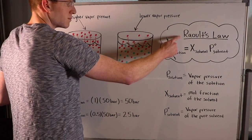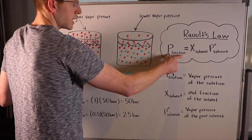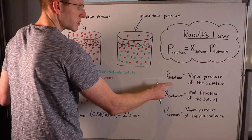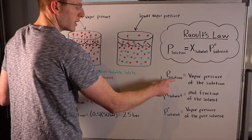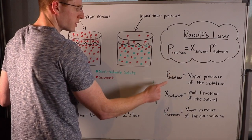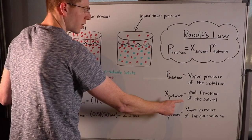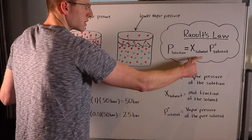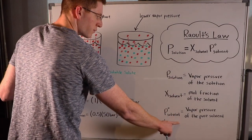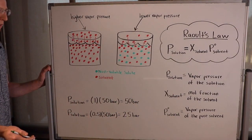Mathematically, Raoult's Law states that the vapor pressure of the solution, P_solution, is equal to X_solvent — the mole fraction of the solvent — times P_solvent, the vapor pressure of the pure solvent.